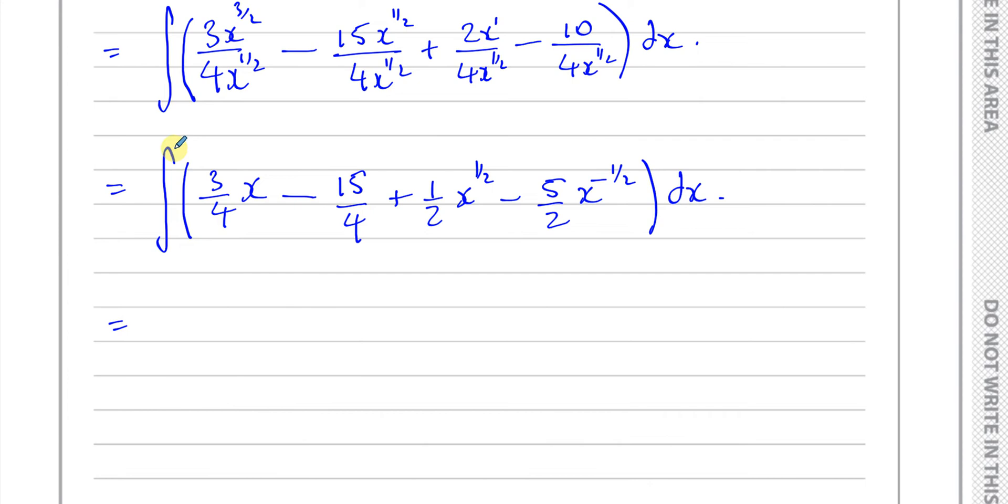So once I start integrating, I don't have the integral sign anymore. This is going to be 3 quarters x to the power of 2 divided by 2, minus 15 over 4 x to the power of 1 divided by 1, plus a half x to the power of 3 over 2 divided by 3 over 2, which is going to become times 2 over 3.